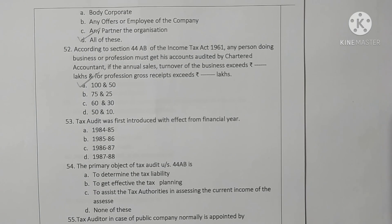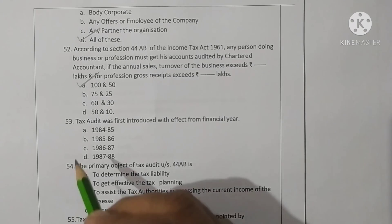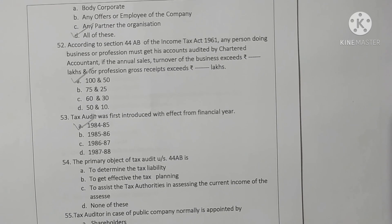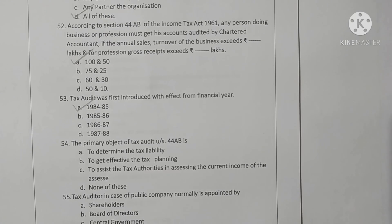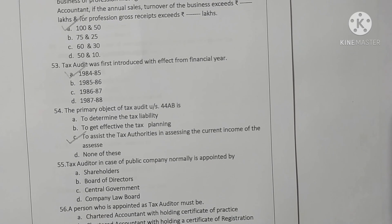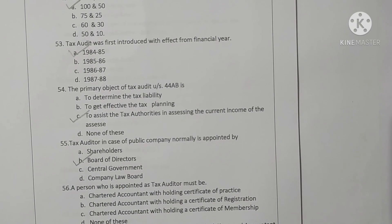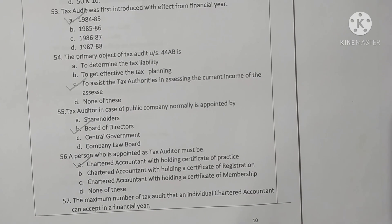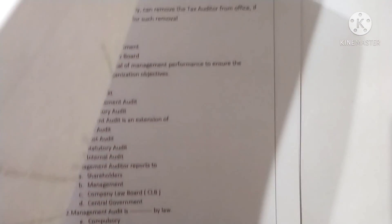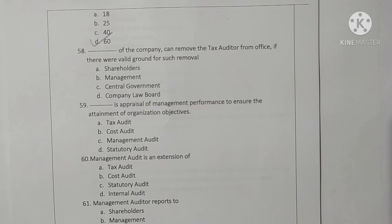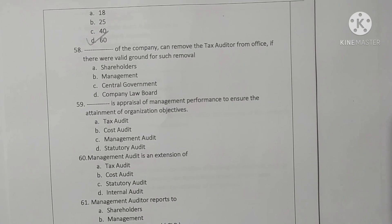Question 53: The primary object of tax audit under section 44AB is to assist tax authorities in assessing the correct income of the assessee — option C is correct. Question 55: The tax auditor in case of a public company is normally appointed by the board of directors — option B is correct. A person appointed as tax auditor must be a chartered accountant holding a certificate of practice — option A is correct. The maximum number of tax audits an individual chartered accountant can accept in a financial year is 60 — option D is correct. The management of the company can remove a tax auditor from office if there is a valid ground for such removal — option B is correct.